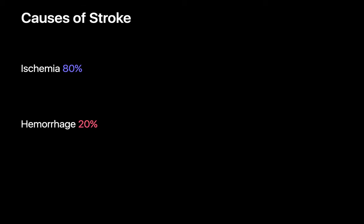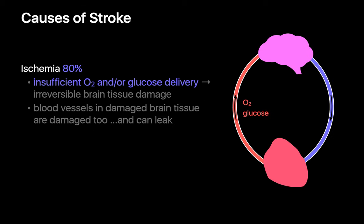The large majority of strokes are ischemic in cause. In ischemic strokes, insufficient oxygen or glucose delivery to the brain results in irreversible brain tissue damage. Secondary bleeding may sometimes occur if the blood vessels within the damaged brain tissue are themselves damaged and leak.